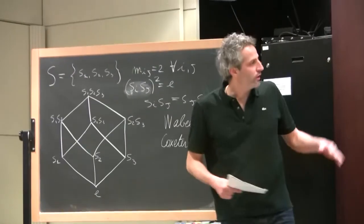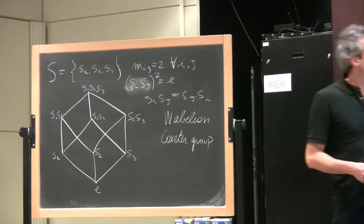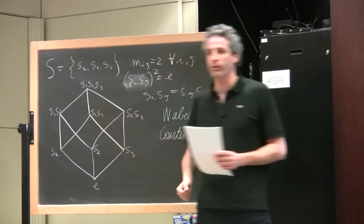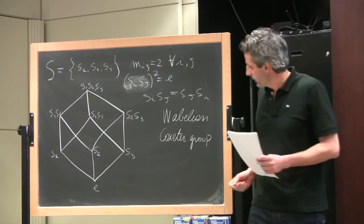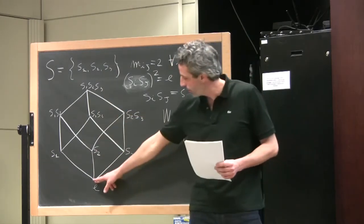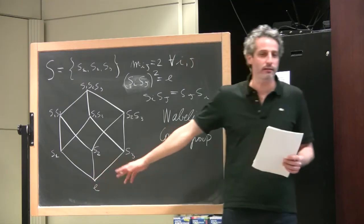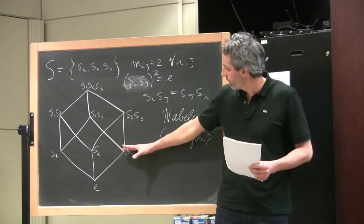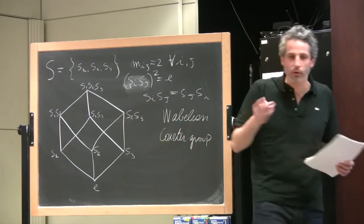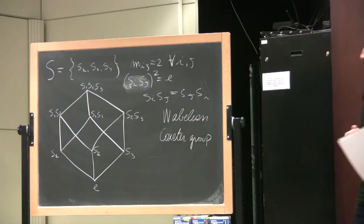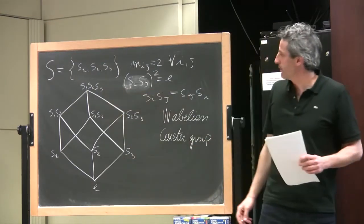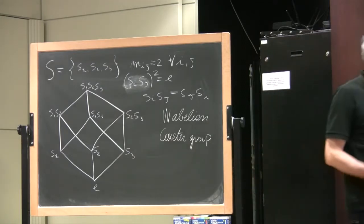Since we are interested in the poset structure, we visualize the Coxeter group with the Hasse diagram, which is ranked by the length. We have one bottom element, which is always the identity. Then in rank 1 we have the generators. In rank 2 we have the product of two generators. And then we have one element of rank 3, which is the top element in this case.